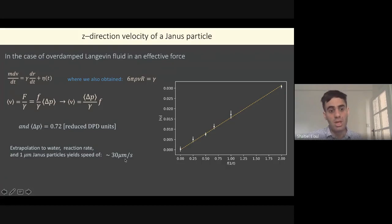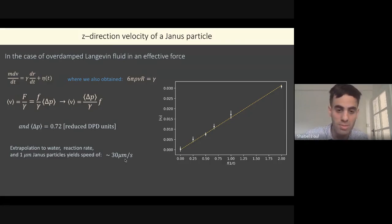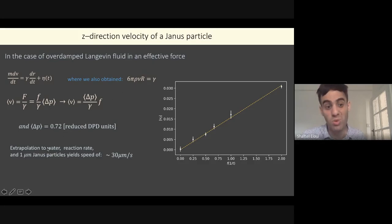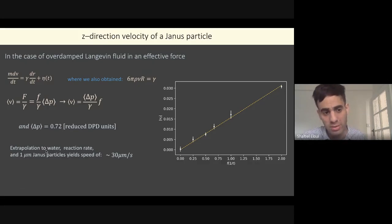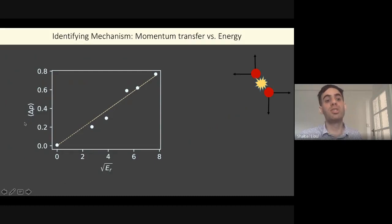We studied size effects and confirmed frequency linearity holds, allowing us to scale up to realistic Janus particle sizes. We find speeds even higher than double the maximum speed reported by Wilson Poon — he reported a maximum of 17 micrometers per second while we get around 30 micrometers per second — accounting for the fact that DPD viscosity is about 20 times higher than water. Looking at different energies, the average momentum scales with the square root of applied energy, which is a strong indication we're observing genuine momentum transfer rather than thermophoresis.